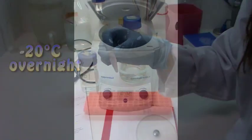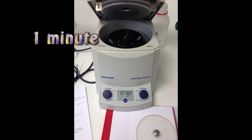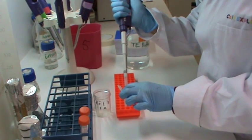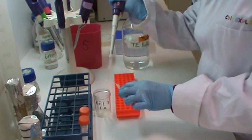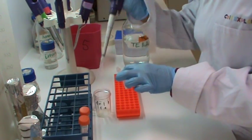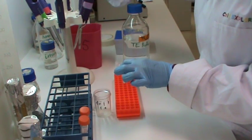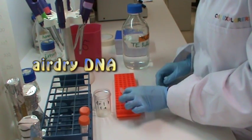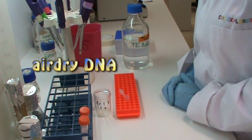I am now going to centrifuge the microfuge tube for one minute to pellet the DNA. I am now removing the supernatant. I am then going to leave the DNA to air dry for a couple of minutes.